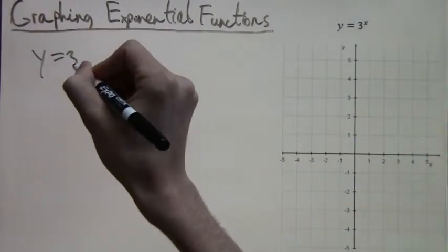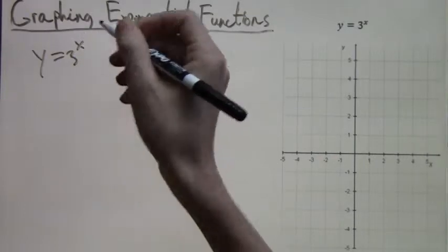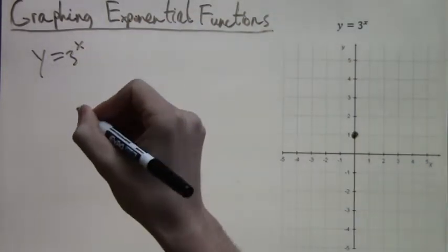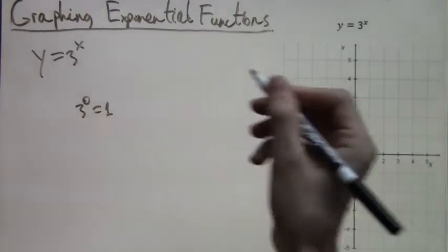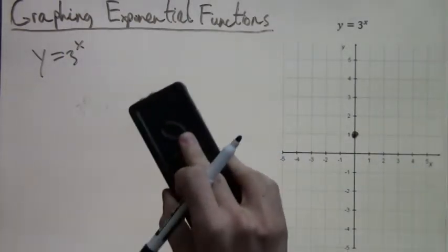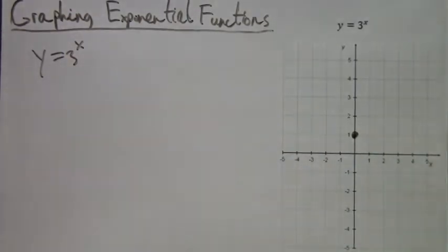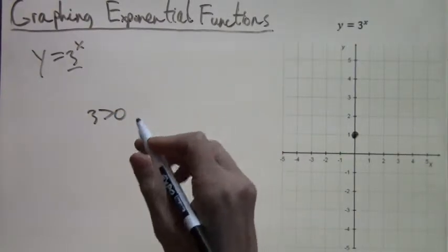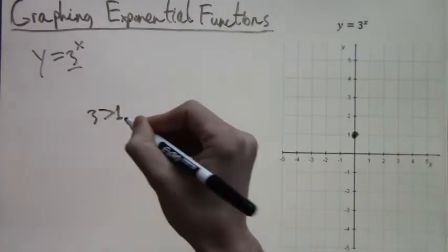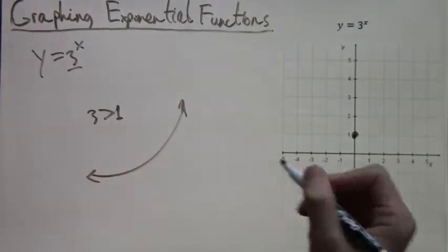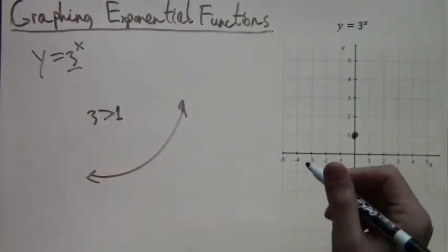So let's take a basic example, just three to the x. The first question is, well of course we know when we plug in x equals zero, that we just get three to the zero is one. So the point zero one we can immediately draw. Next is the overall shape. Since three is greater than one, and that's the sort of barrier in question, if the number is greater than one, then we have the curve up.